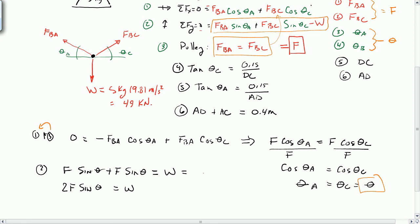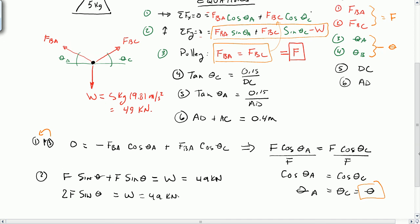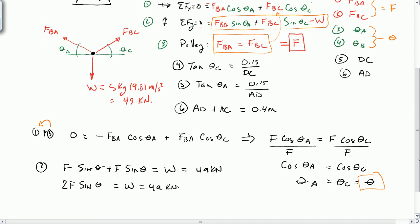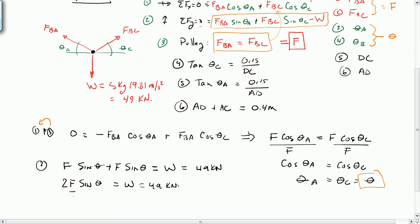W is equal to 49 kilonewtons. And what else do we know here? If we know, we don't know F, which is what we're looking for, and we don't know theta. But if we go back to our geometry,